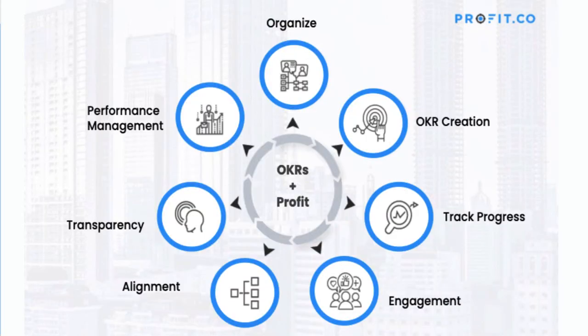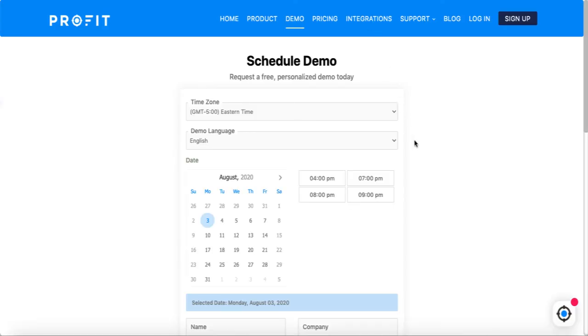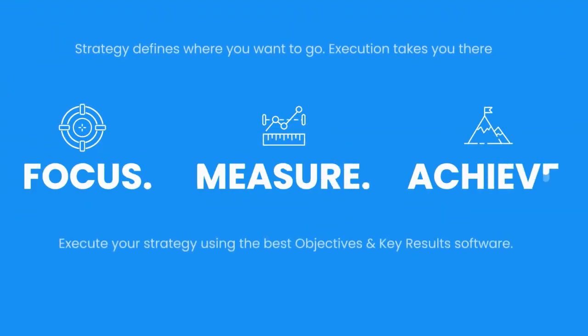As you can see, Profit has a variety of features that can help you rise above the challenges that CMOs and marketing departments are facing in order to achieve your goals. By defining our OKRs and establishing the right connections, we're able to stay on top of what's happening at the marketing level and take the necessary actions in order to be successful. If you'd like to discuss the specific needs of your organization and receive a free, tailored demo, you can sign up for one under the demo section of our website. Thanks for listening — I'll see you next time.